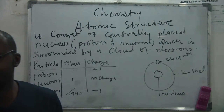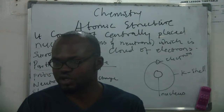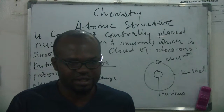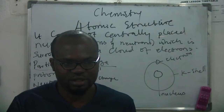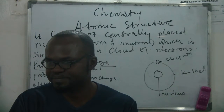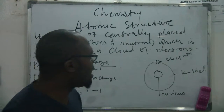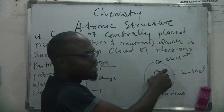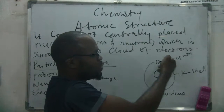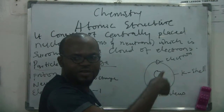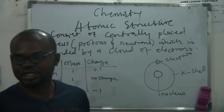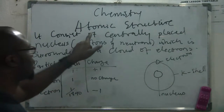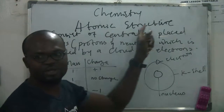Whether it is an atom of sodium, oxygen, or chlorine — all of them have a nucleus at the center, then electrons revolving around it. That is the structure of an atom, and that is what we call atomic structure.